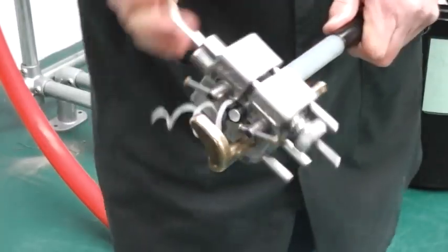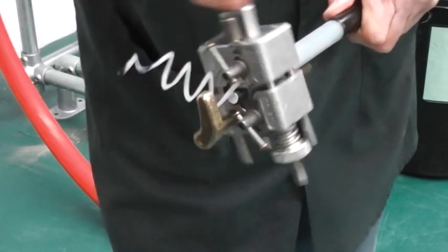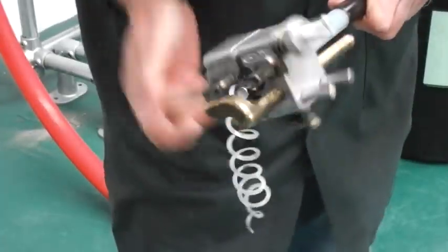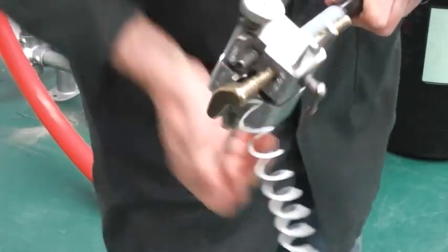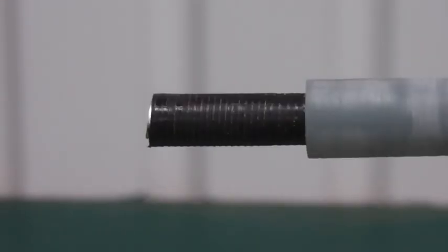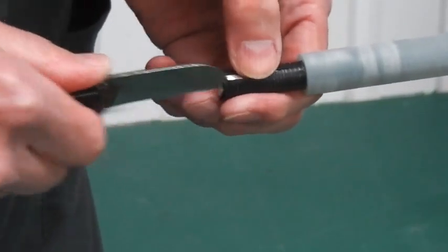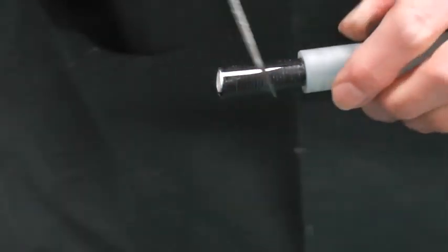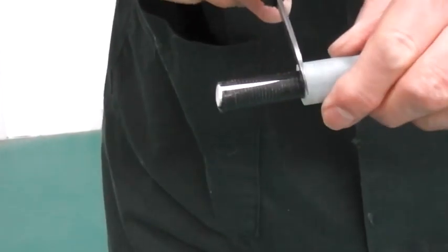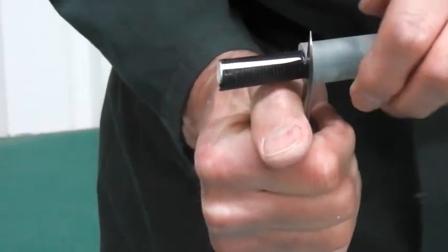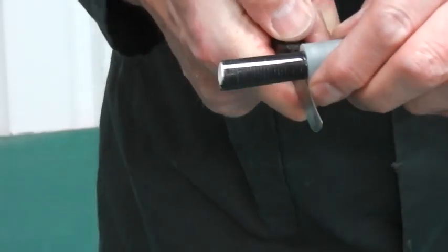And now using an insulation stripping tool set to the correct depth, score the semi-conductive layer around the conductor and remove.